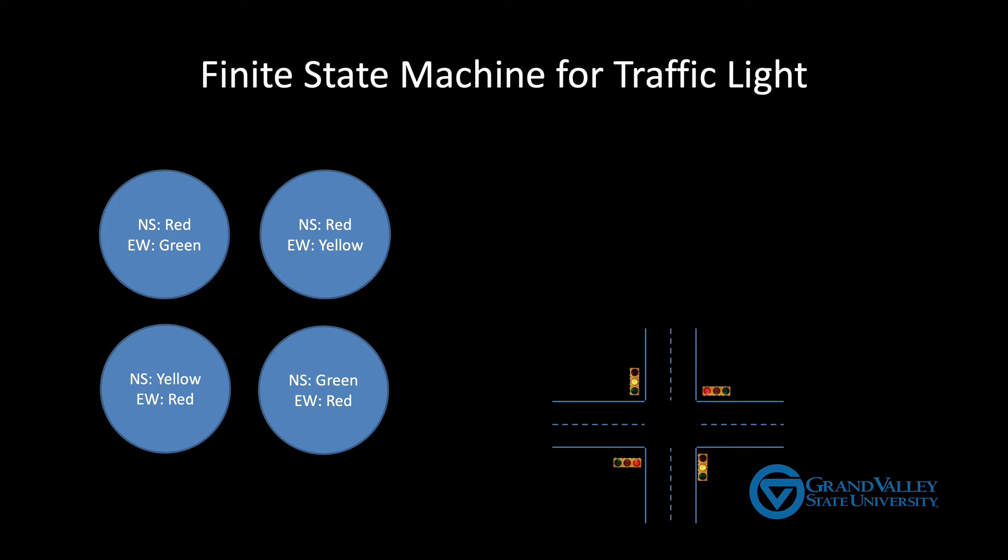A finite state machine not only lists all the possible states like we've done here, but it also shows how you transition from one state to another. In this case, the transitions are simple. You always move from one state to the next. For example, if the light is currently green for the east-west street, the next thing the traffic light will do is turn yellow. We show this by placing an arc from the first state to the second.